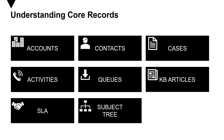KB articles stand for knowledge-based articles. These are information articles — a repository to help resolve cases — built over time and used by support users or service engineers. SLA stands for service level agreements. SLA explains the level of service offered to customers, and you can define metrics and KPIs (key performance indicators) to attain certain service levels.